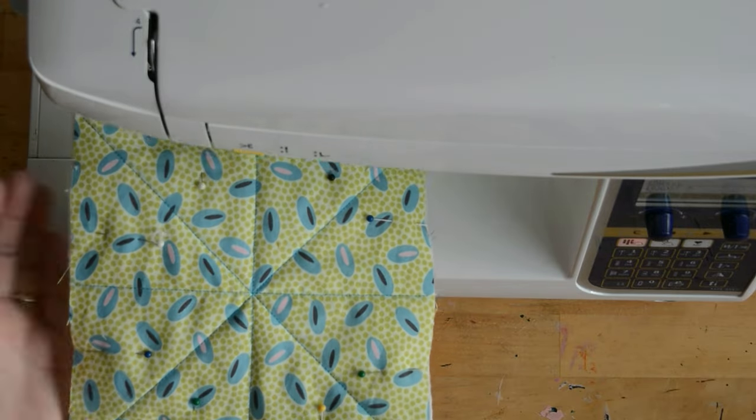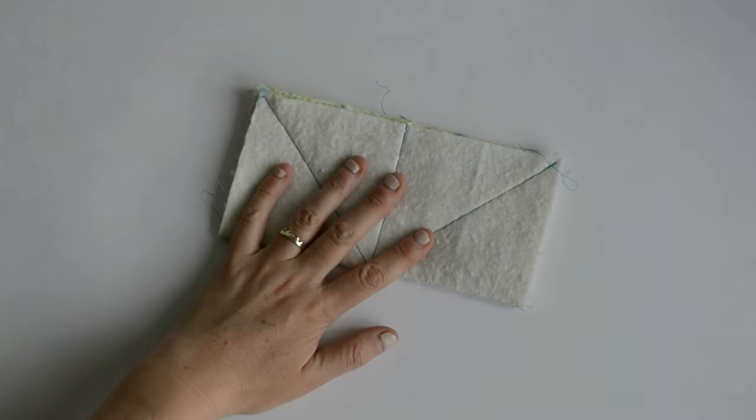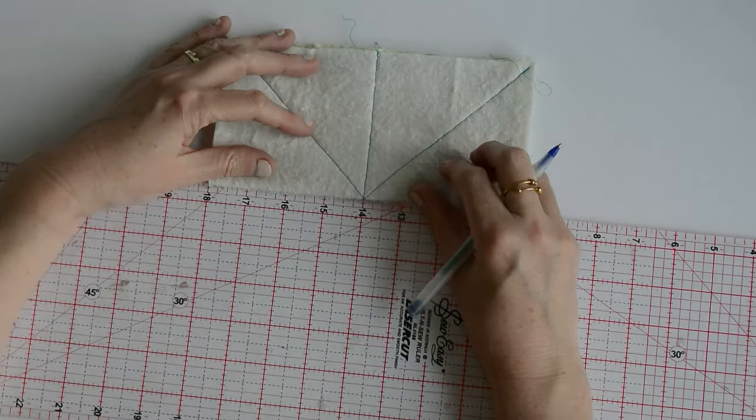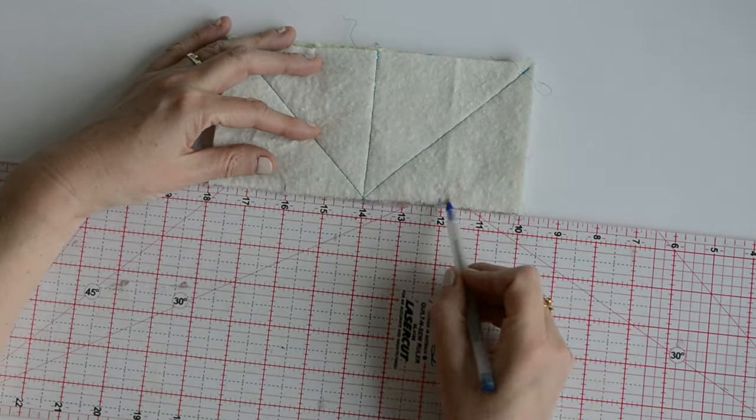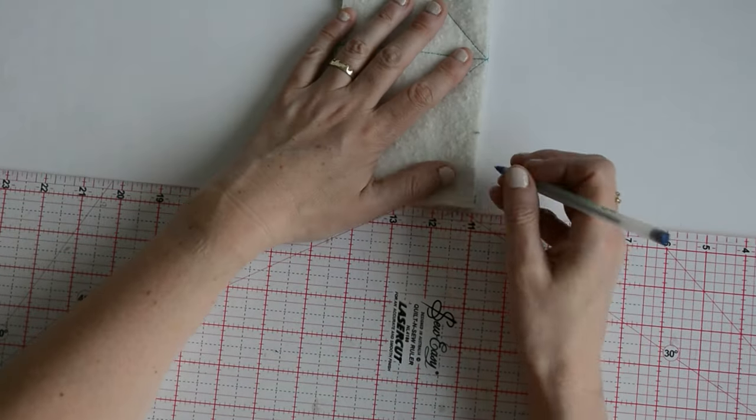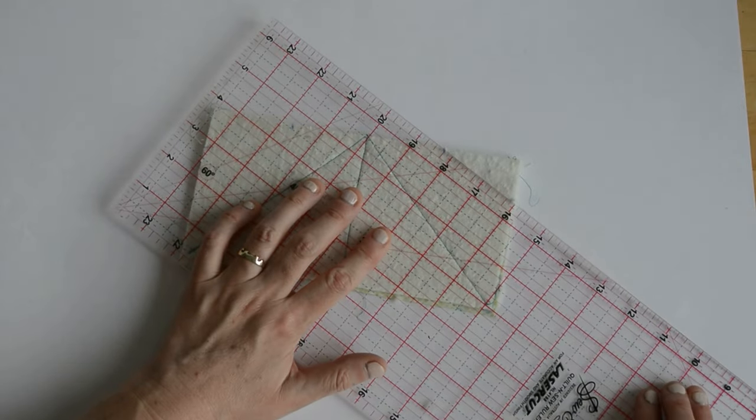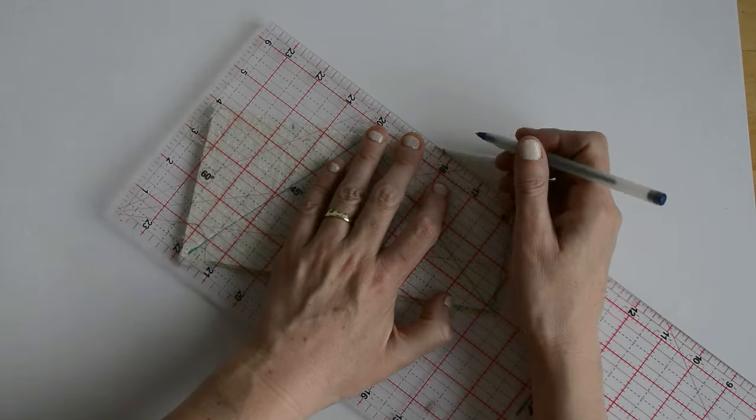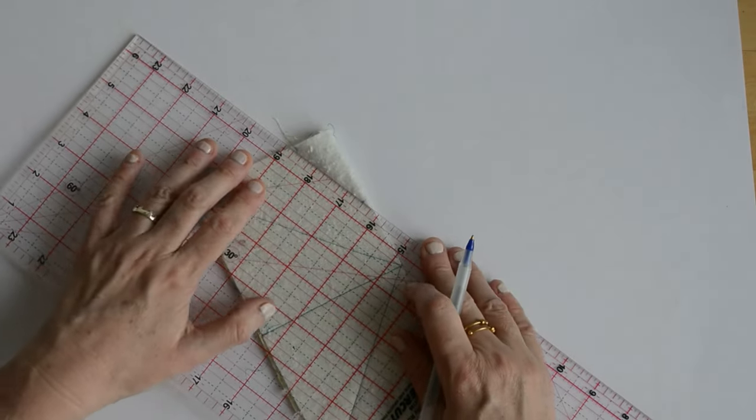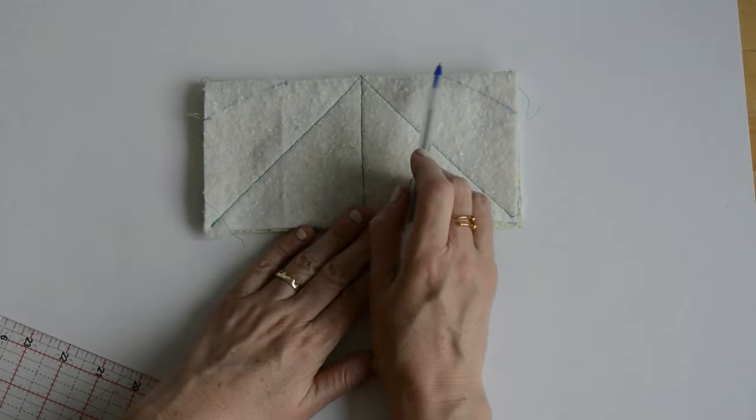So now we've quilted that together we're going to add some darts. So you're going to fold your fabric right sides together and you're going to mark two inches in along the fold and one inch on the side edge also from the fold. So you're creating some diagonals, just going to mark that so it's easy to see for stitching.